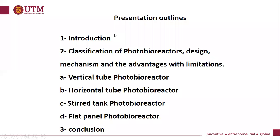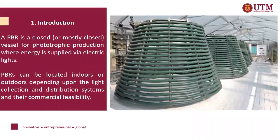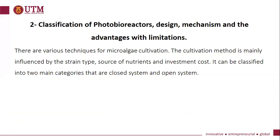First of all, we have the vertical tube photobioreactor, horizontal stirred tank photobioreactor, and flat panel photobioreactor. A photobioreactor is a closed or mostly closed vessel for phototrophic production where energy is supplied via electric lights. It can be located indoors or outdoors depending upon the light collection and distribution system and their chemical visibility. In this classification, I will discuss the design for each type, the mechanisms, and their advantages with their limitations.